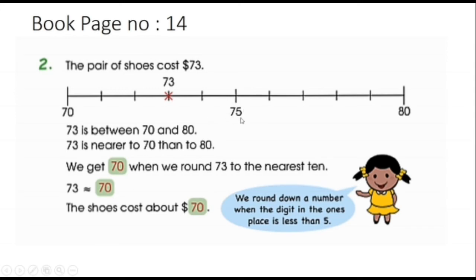Again here we would not round it off to 75 because there is no zero at its ones place. So we round down a number when the digit in the ones place is less than five. Like here it is three, less than five. That's why we will round it down towards 70.